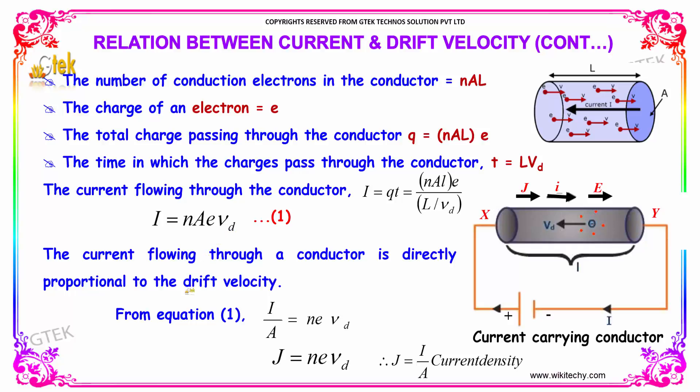The current flowing through a conductor is directly proportional to the drift velocity. So I by A is equal to n into e into Vd, so J equal to n into e into Vd, where J is the current density.